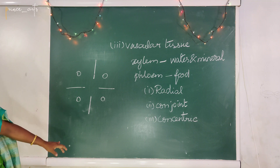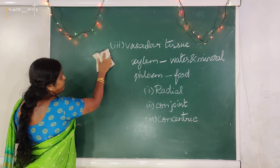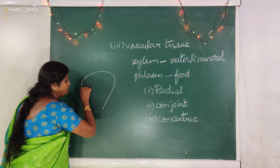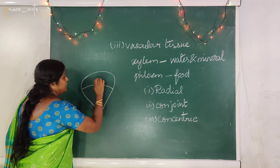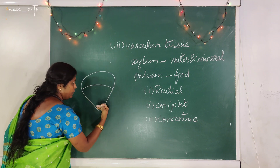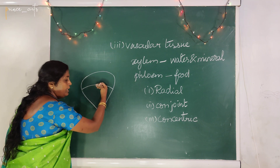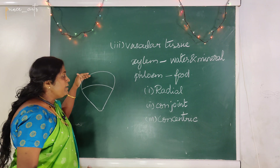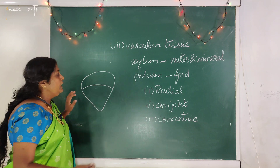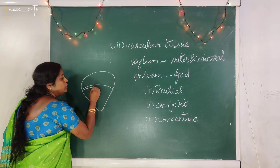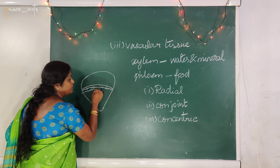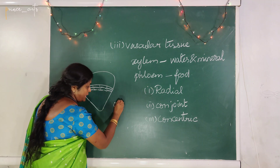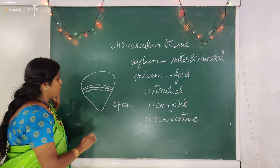If you take the conjoint bundle, xylem and phloem are on the same radius. Xylem will be present inside and phloem towards the periphery. If cambium is present in the bundle, it is called open, and if cambium is absent, it is called closed. Cambium is responsible for secondary growth and secondary thickening.